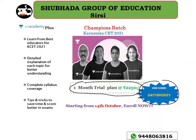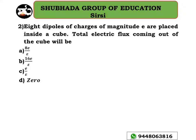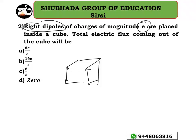Look at the next problem: 8 dipoles of charges of magnitude E are placed inside a cube. The question asks what the total electric flux coming out of the cube will be. A dipole consists of a positive charge separated from a negative charge by a small distance.